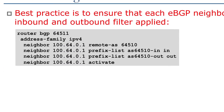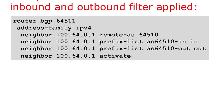Looking at the example on the screen, the router with ASN 64511 has an eBGP neighbor with IPv4 address 100.64.0.1 and ASN 64510. It has a filter named AS64510-in applied to its inbound prefixes and another named AS64510-out applied to its outbound prefixes.